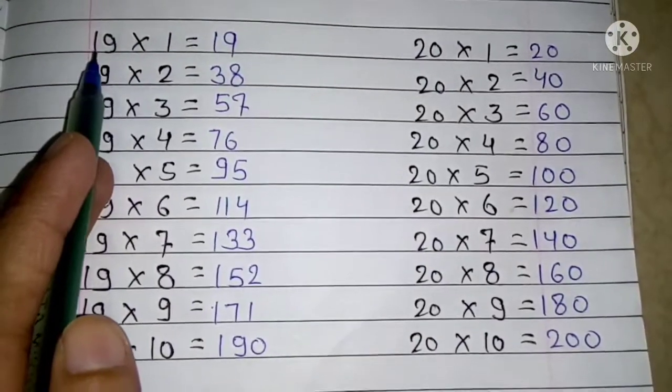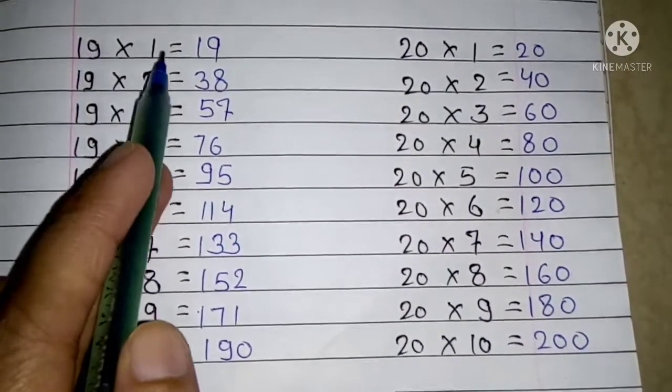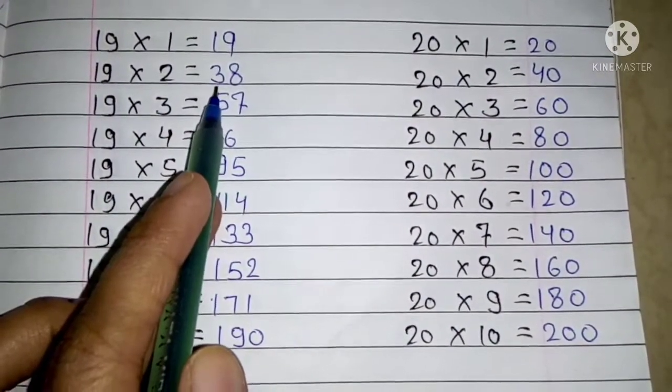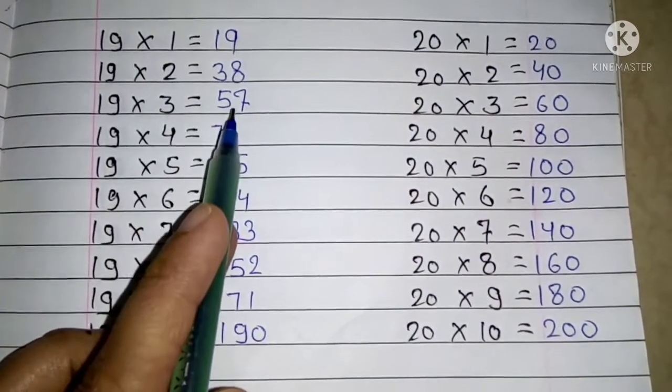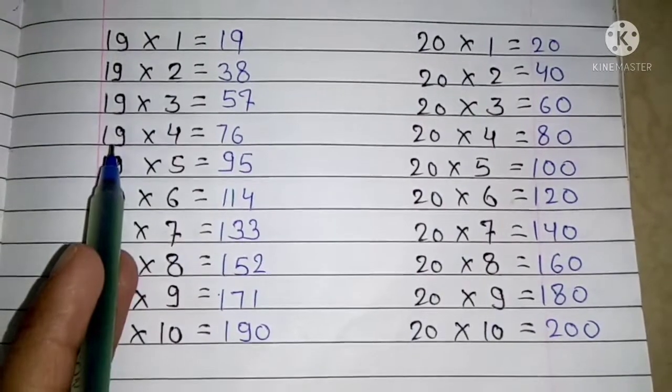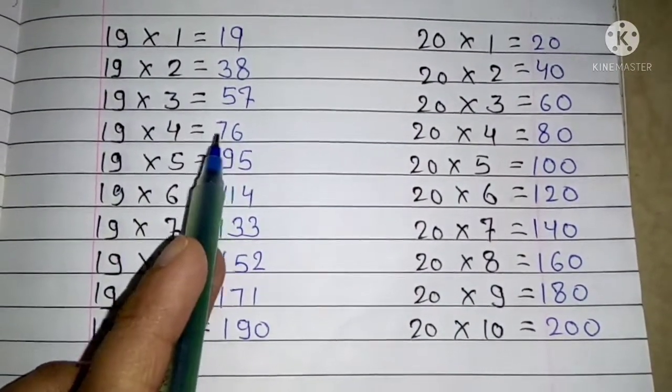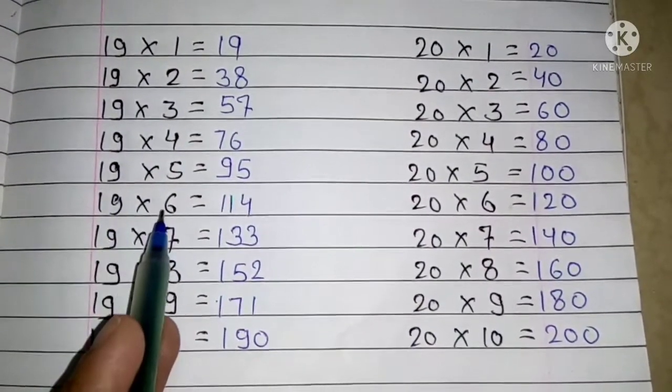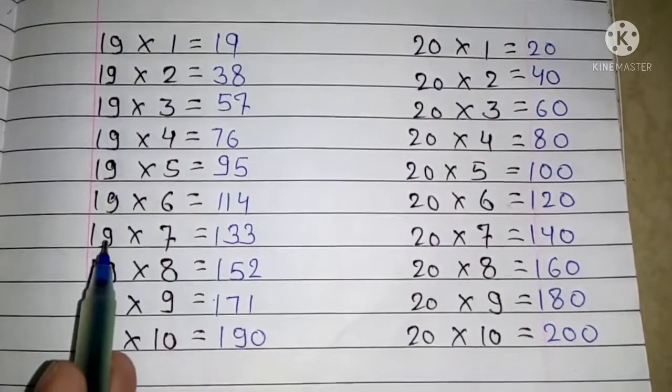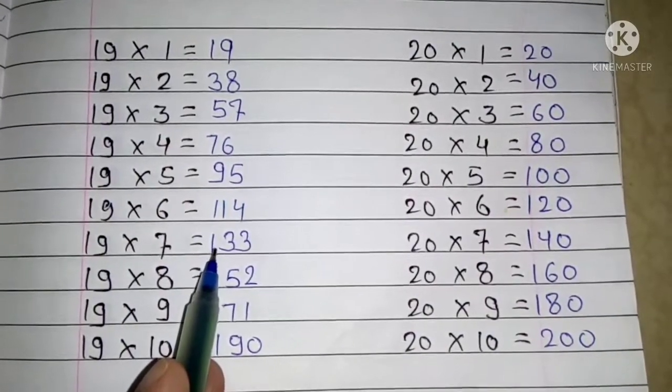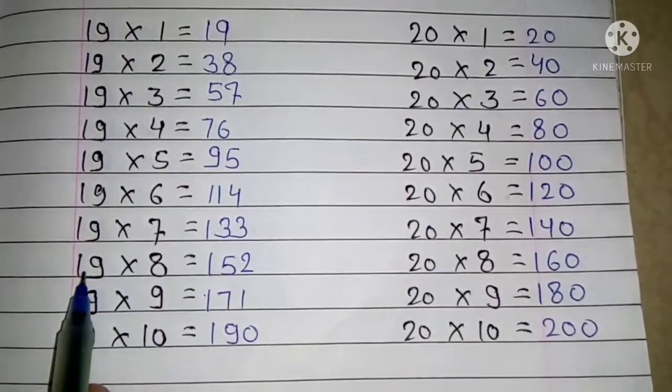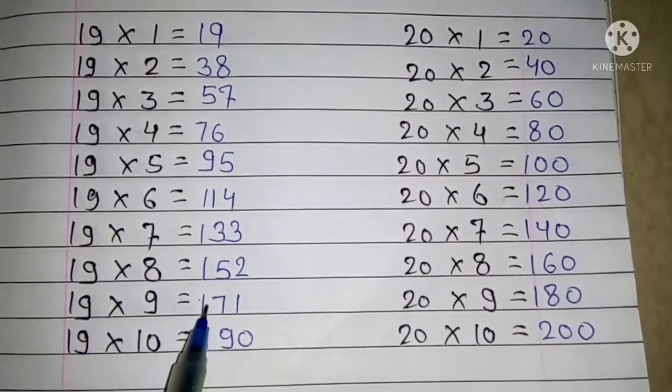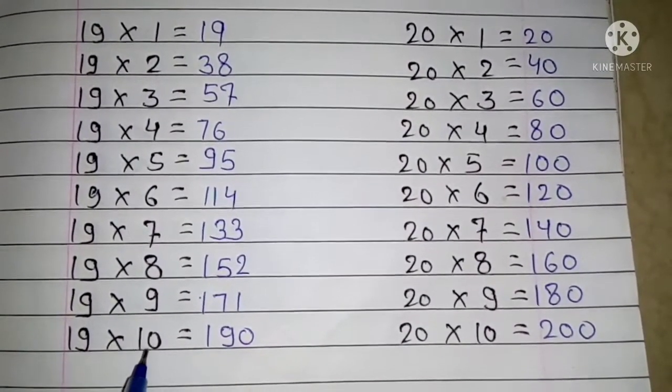Next table 19: 19 ones are 19, 19 twos are 38, 19 threes are 57, 19 fours are 76, 19 fives are 95, 19 sixes are 114, 19 sevens are 133, 19 eights are 152, 19 nines are 171, 19 tens are 190.